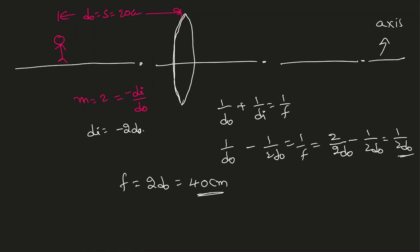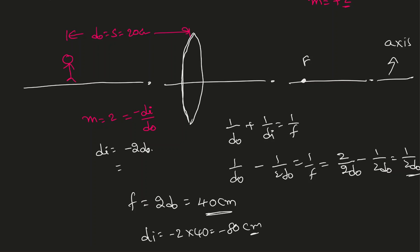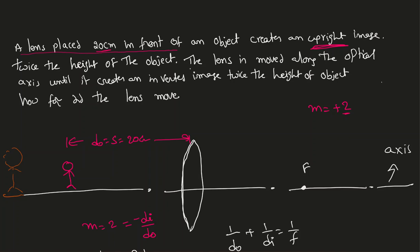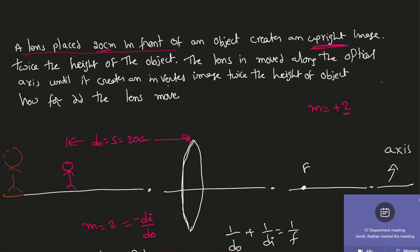Since the focal length is positive, it is confirmed as a converging lens, with the focal point behind the lens. For the first case, the image distance = -2 × d-naught = -2 × 40 = -80 centimeters. The negative distance means the image forms on the same side as the object — it is a virtual, upright image 80 centimeters from the lens, twice the size. Then the lens is moved along the optical axis until it creates an inverted image twice the height of the object.